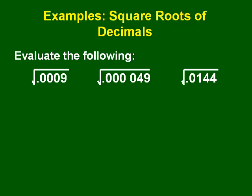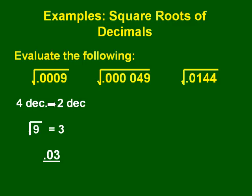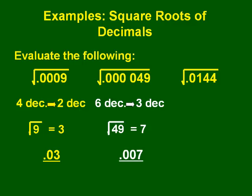Let's evaluate the following square roots and apply our rule. For the first question, √0.0009: we have four decimal places, so the answer should have two decimal places. The square root of 9 is 3, so our answer is 0.03. For the next square root, √0.000049: we have six decimal places, so our answer has three decimal places. The square root of 49 is 7, so the answer is 0.007.